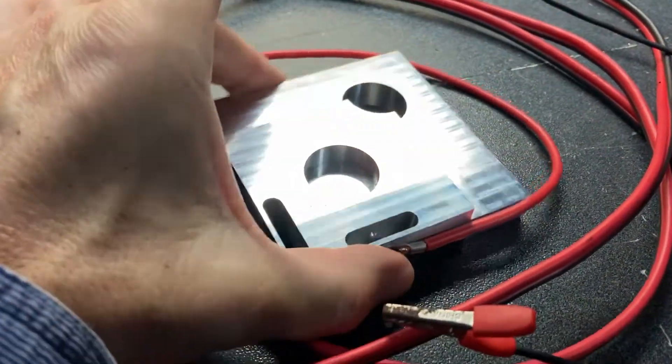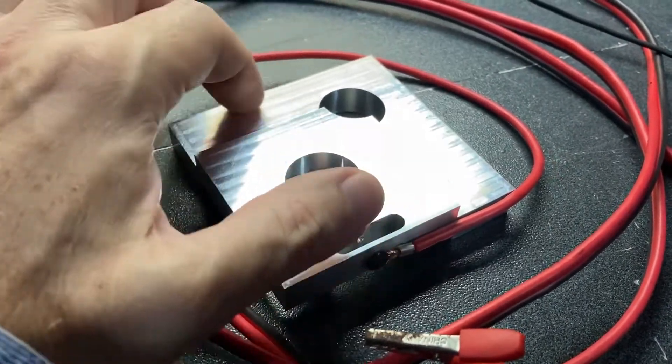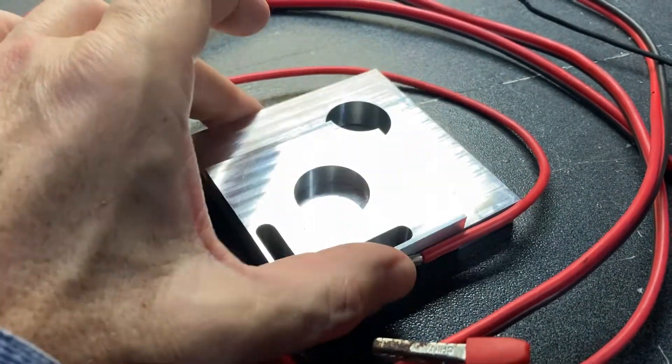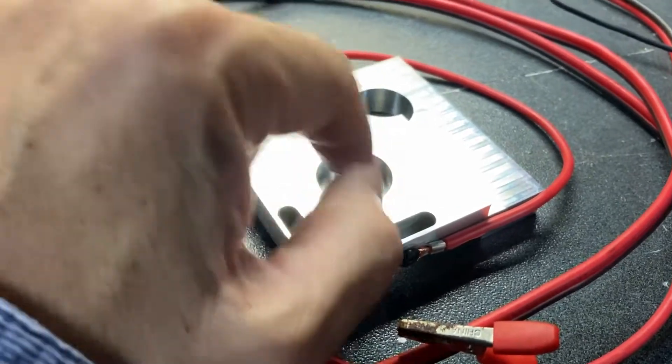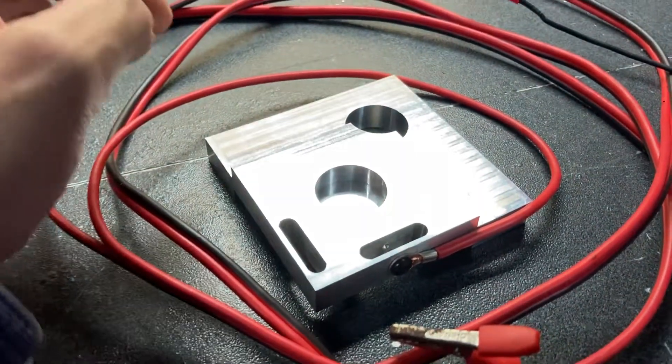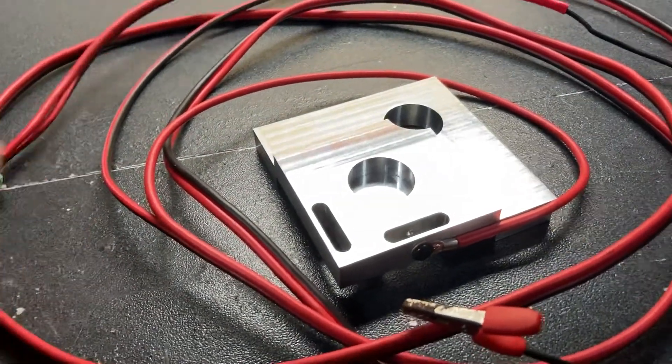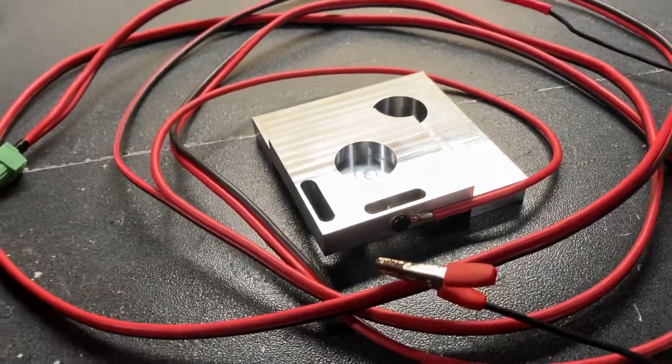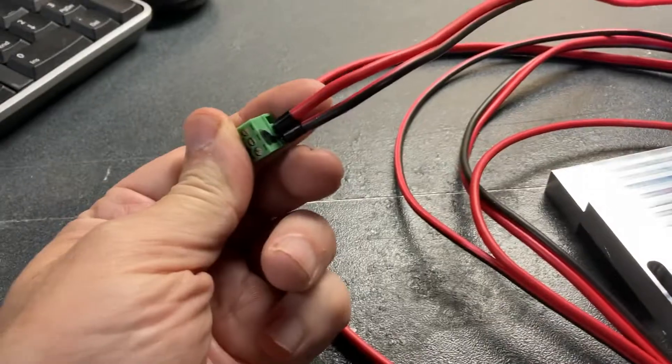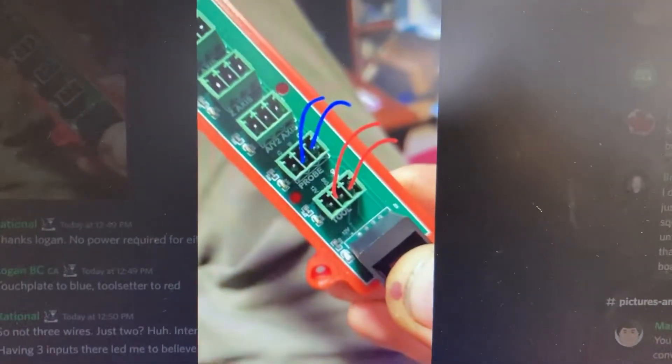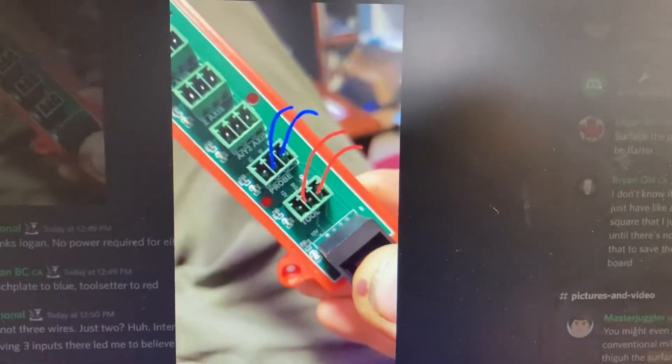And what I have to study next is how to input the proper size of this into IOSender, I imagine, and then how to actually run the probing process. I don't know how to do that yet, so I need to figure that out next. Anyway, hope that helps. I'm going to go plug this into the breakout PCB now and see how it goes. Thanks.